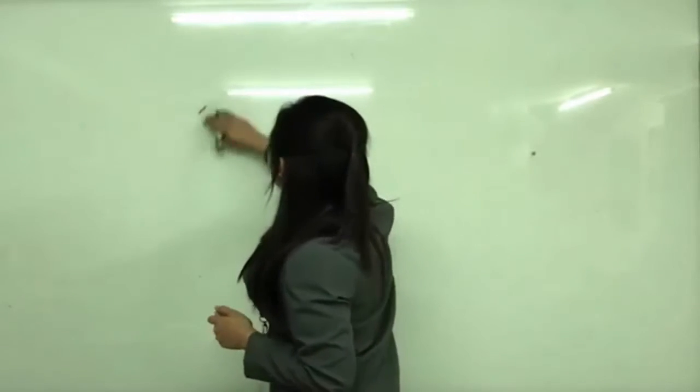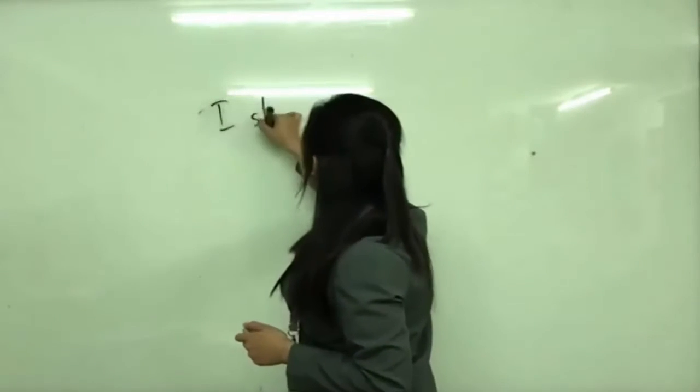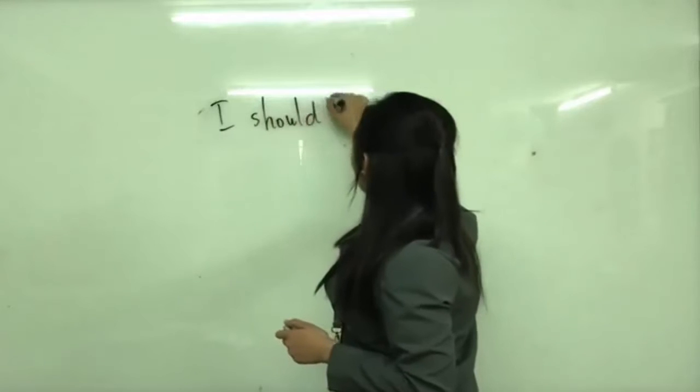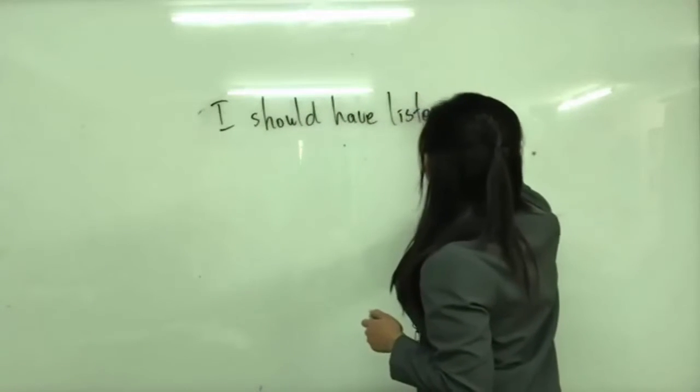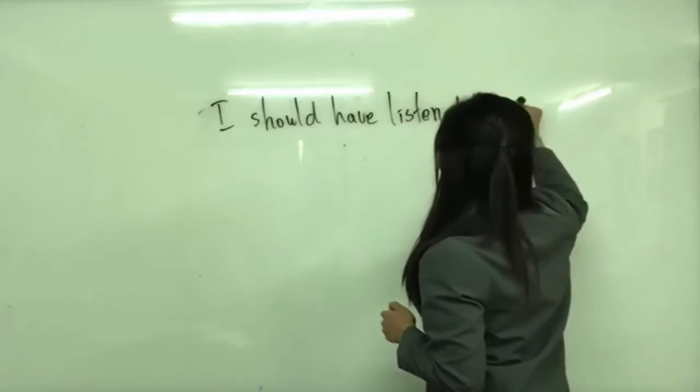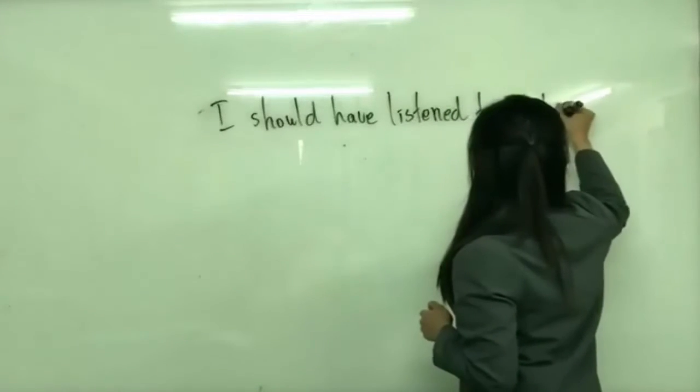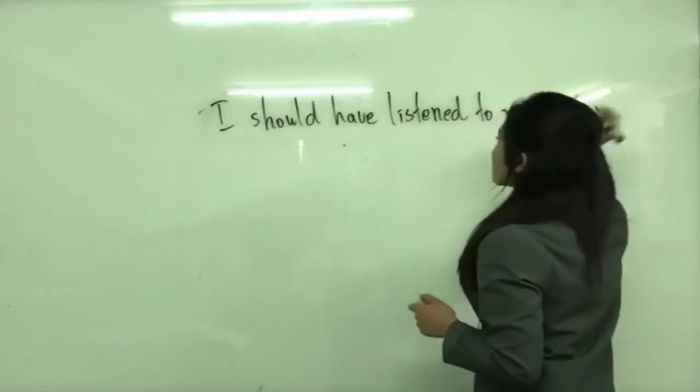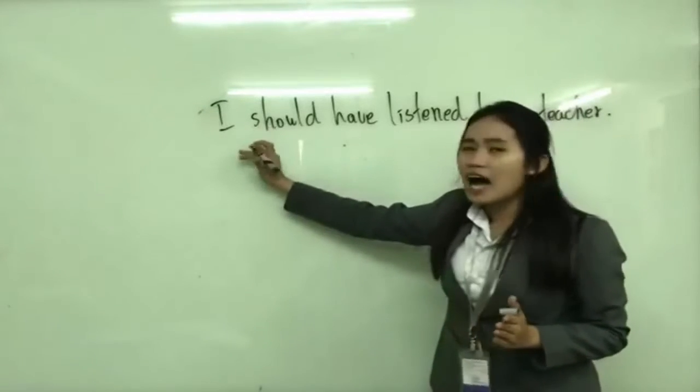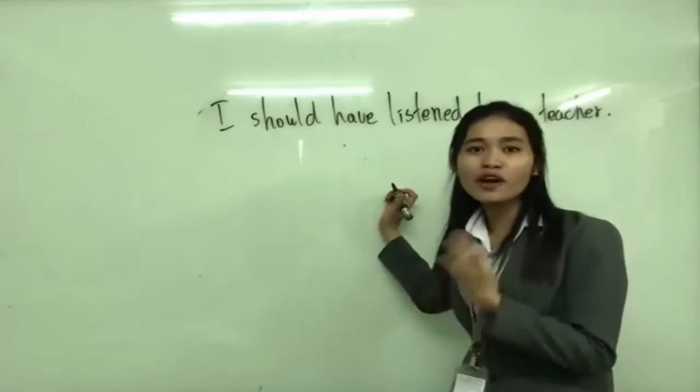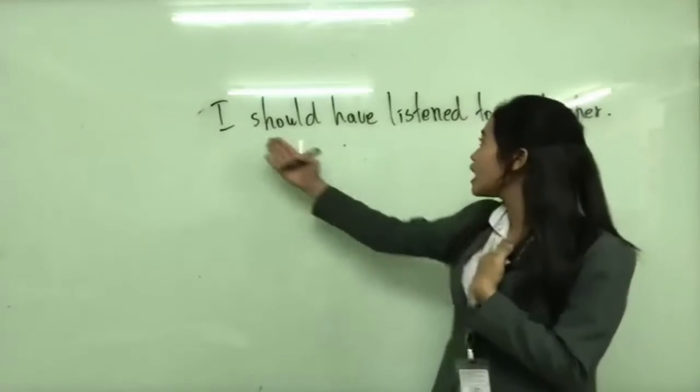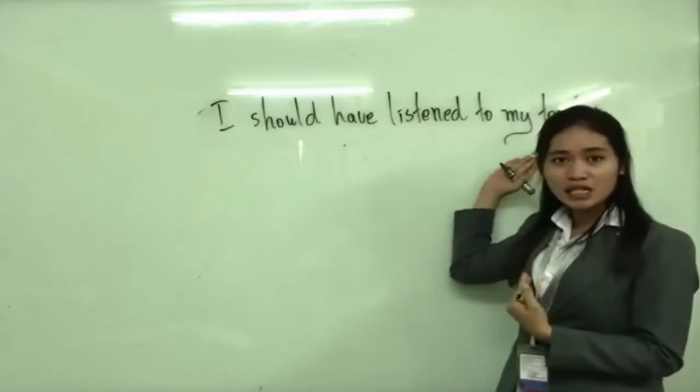I should have listened to my teacher. So in this form, it means I didn't listen to my teacher. That's why I don't know what the lesson talks about, so I feel very regretful about it. That's why I say I should have listened to my teacher.